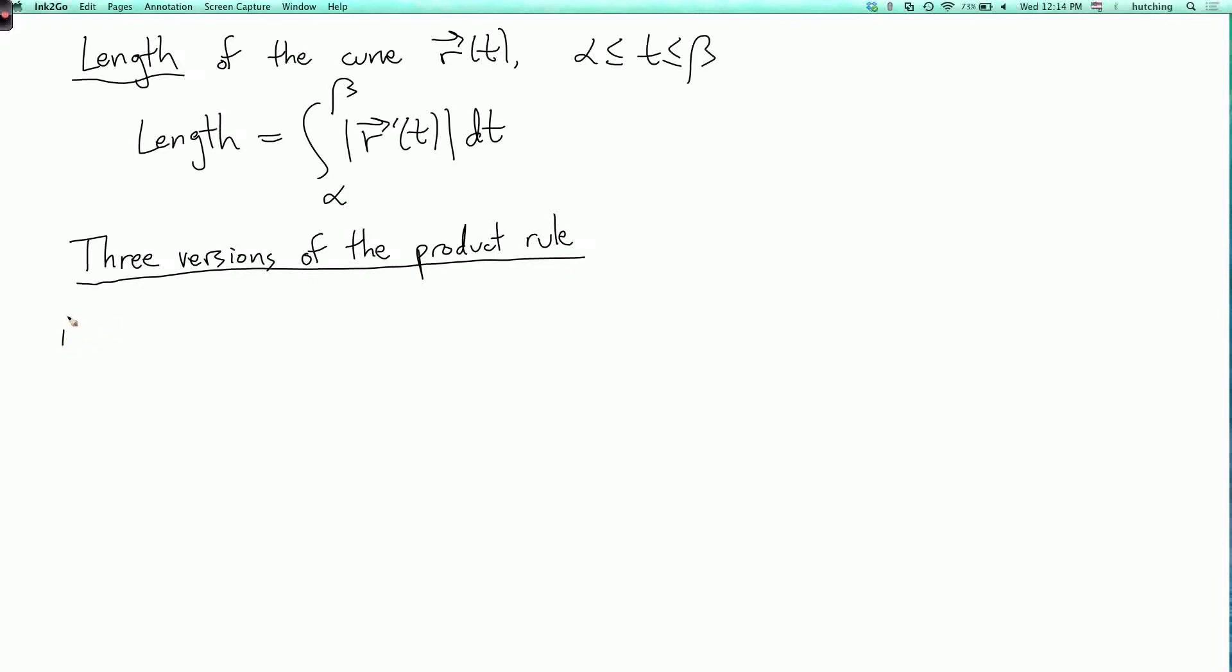So the first is for multiplication of a vector by a scalar. So if f of t is a real-valued function, and r of t is a vector-valued function, well then we get a new vector-valued function, which is the scalar f of t times the vector r of t.